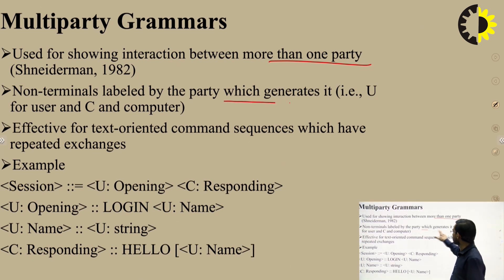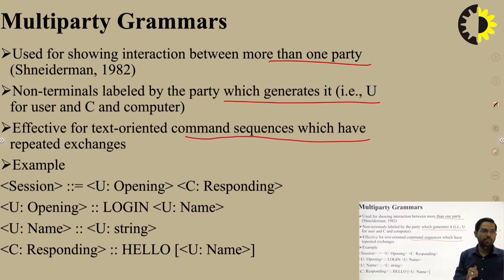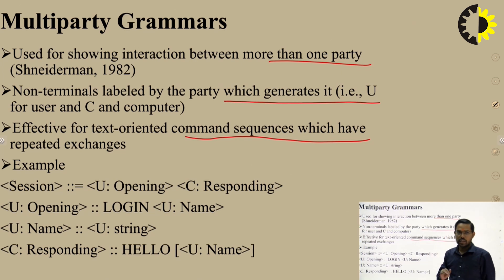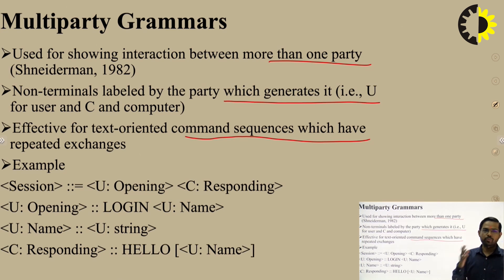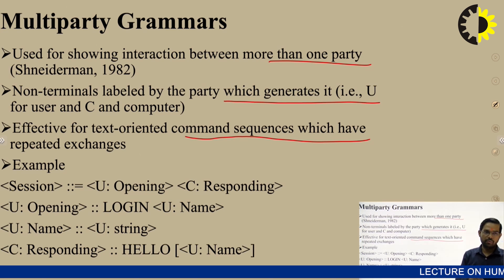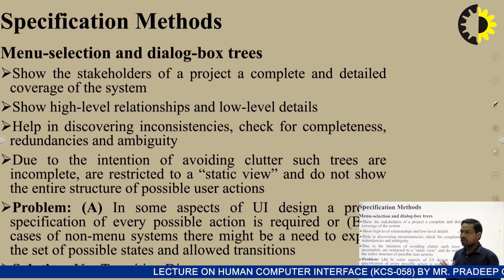In multi-party grammar, non-terminals are labeled by the party which generates them: U for user and C for computer. It is effective for text-oriented command sequencing. For example, a session equals U (opening, such as login and username) and C (responding, such as 'hello username' — a reply from the computer).